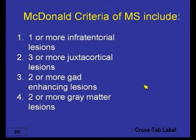This is a question regarding your knowledge of the McDonald criteria of multiple sclerosis. Which of these is included in the McDonald criteria: one or more infratentorial lesions, three or more juxtacortical lesions, two or more gadolinium-enhancing lesions, or two or more gray matter lesions?